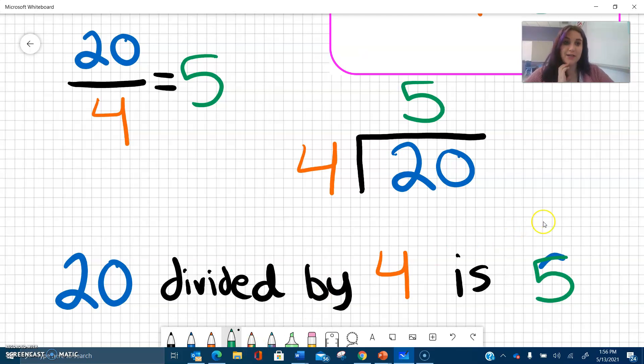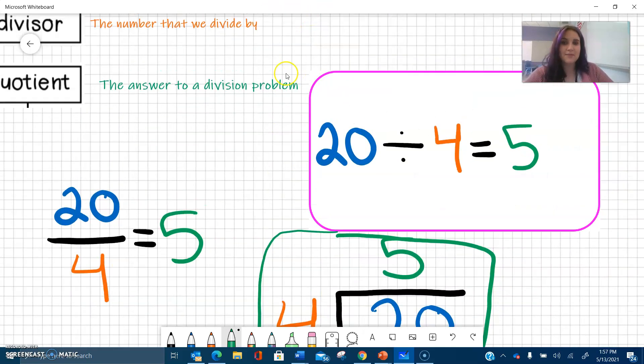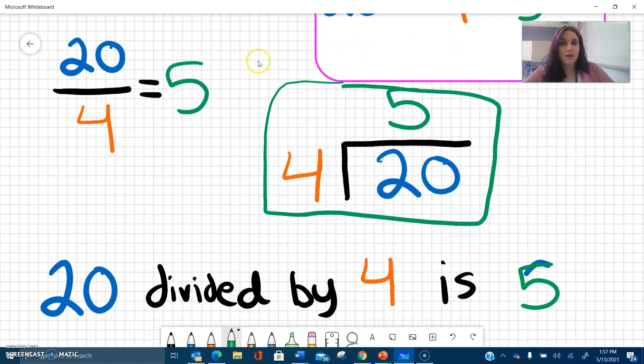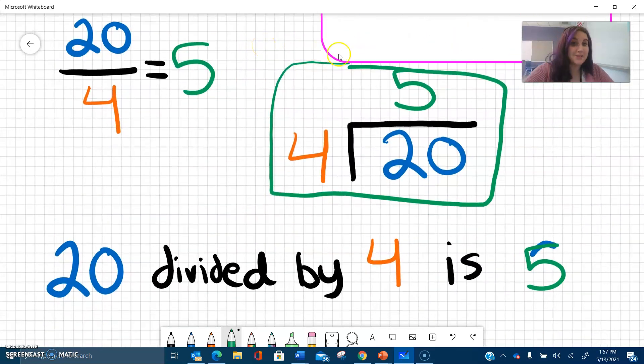So those are three different ways to write a division problem. And you always have the dividend divided by the divisor equals the quotient. So just some cool vocabulary and notations for when we work with division. Long division, we will use this box method when we're working with long division. If you're working with fractions, you use the fraction bar. And sometimes you'll see the division symbol. But they all come out to be the same thing.